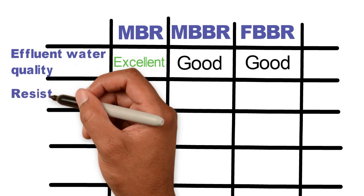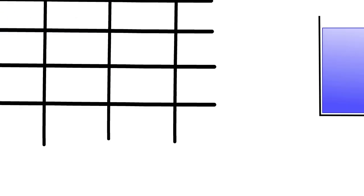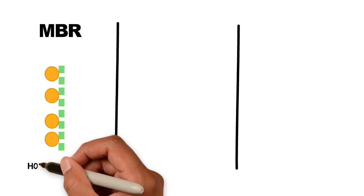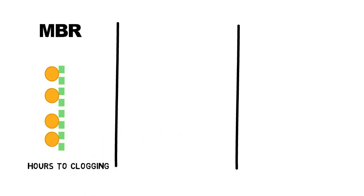Resistance to influent peaks and grease leaks. MBRs are very sensitive to changing influent values. Grease leaks can cause clogging of the fine membranes so that they must be cleaned or replaced.